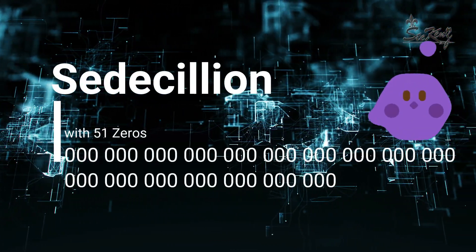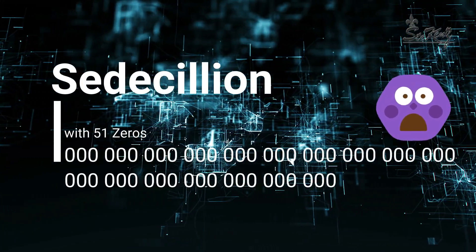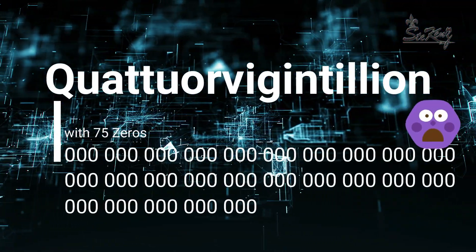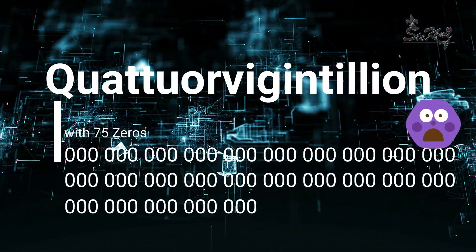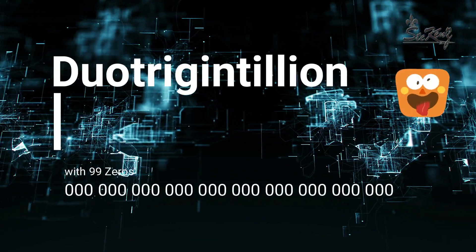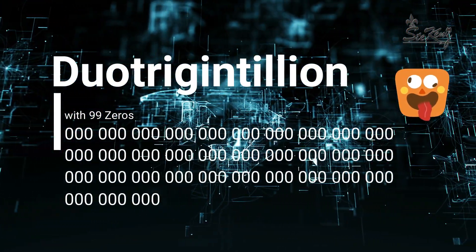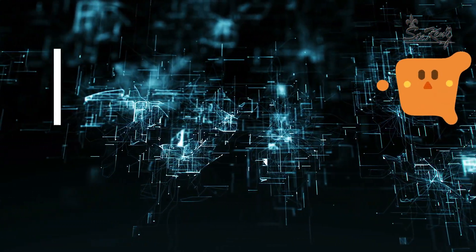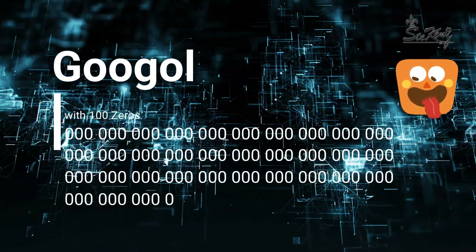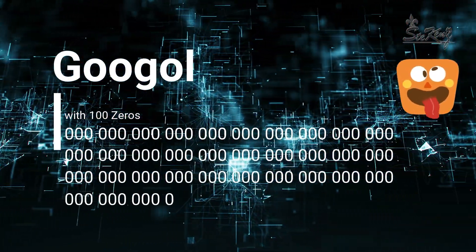One with 51 zeros is called centillion. One with 75 zeros is called quattuorvigintillion. One with 99 zeros is called duotrigintillion. One with 100 zeros — this number is a magic number called Googol.